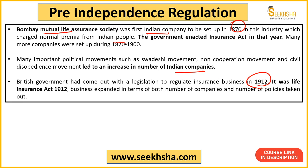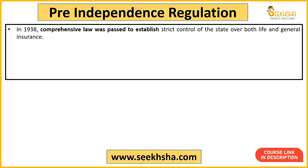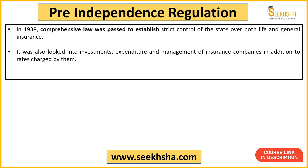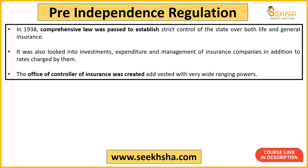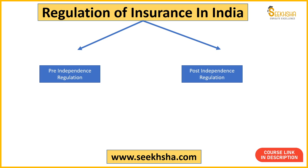Political movements शुरू हो गई थीं, Congress आ चुकी थी, 1905 में Swadeshi movement आ गया, और हिंदुस्तानी companies insurance sector में और ज़्यादा enter करने लगीं। 1912 में Life Insurance Act of 1912 लेकर आई British सरकार — इससे number of companies और policies बढ़ीं। फिर 1938 में दुबारा एक Act लाया गया जिससे private companies पर strict control establish किया गया — investment, expenditure, management हर चीज़ पर। एक office भी create किया गया जिसको Controller of Insurance बोला गया, जिसे wide powers दिए गए।